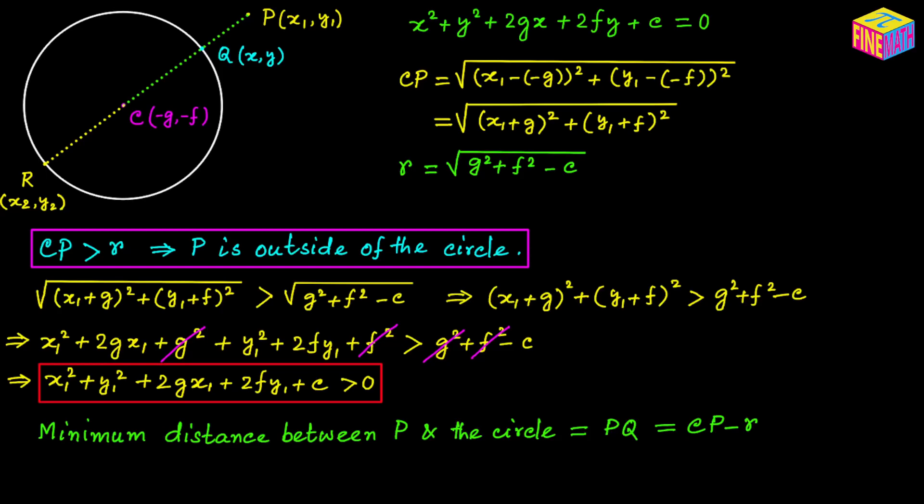We already know the value of R because the equation of the circle has been given, and we can calculate CP from the coordinates of the center and point P. So CP is known, R is known, and the minimum distance is CP − R. The maximum distance PR equals PC + CR, which is CP + R.